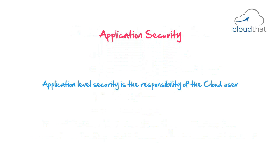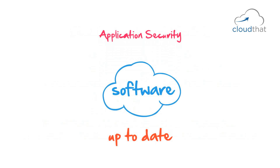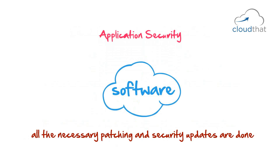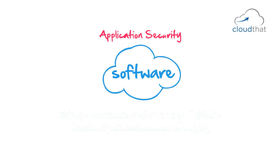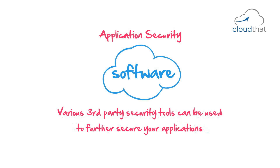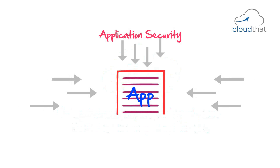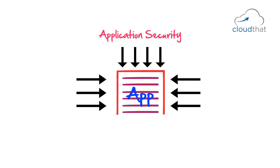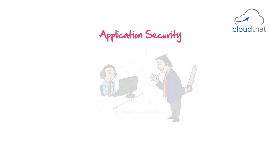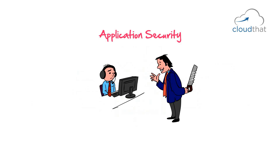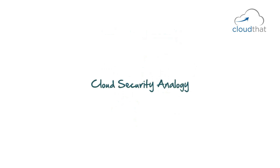Application-level security is the responsibility of the cloud user. Make sure all installed software is up to date and that necessary patching and security updates are applied. Take necessary measures to prevent attacks like SQL injection and cross-site scripting, and use proper authentication APIs. Third-party security tools can further secure applications, and penetration testing is recommended before launch. Social engineering — where an intruder poses as an authority and manipulates employees into revealing confidential information — is another threat to guard against.